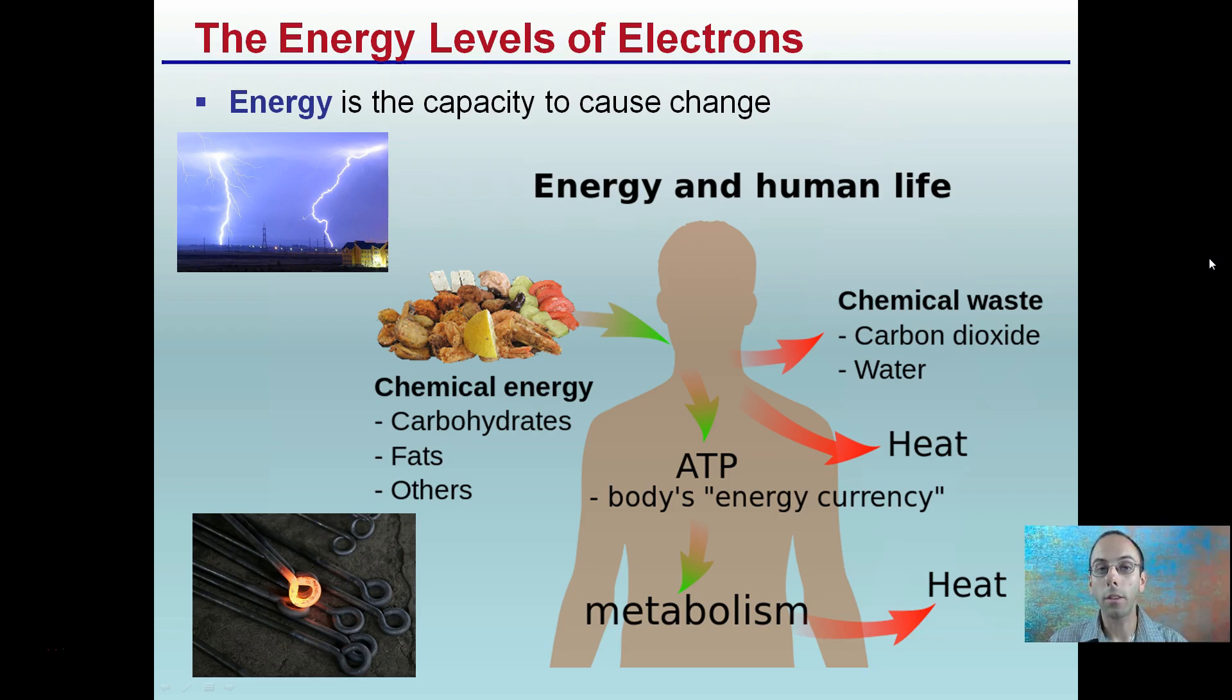Energy is the capacity to cause change. Energy in human life, we have our chemical energy here being converted into ATP, which is the body's energy currency, as part of our metabolism. There is heat given off and chemical waste given off, but the energy of those electrons is a lot of this type of energy, which is the capacity to cause change. The main molecule is ATP, adenosine triphosphate.